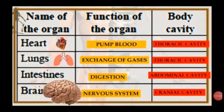In the previous standard we have learnt about some organ systems, their functions and their location in our body. With the help of that, we have to complete this table covering the name of the organ, function of the organ, and body cavity.